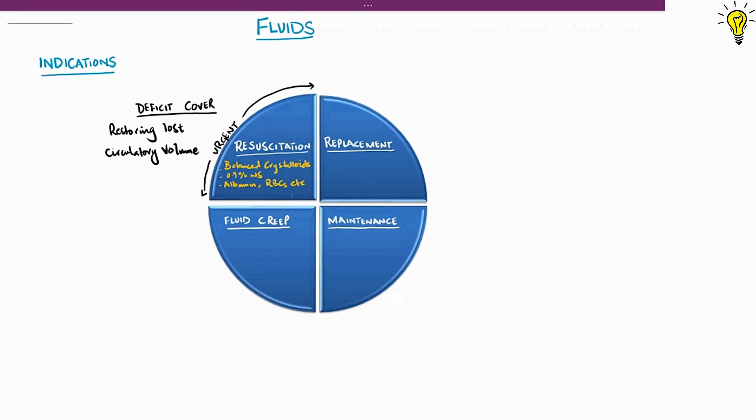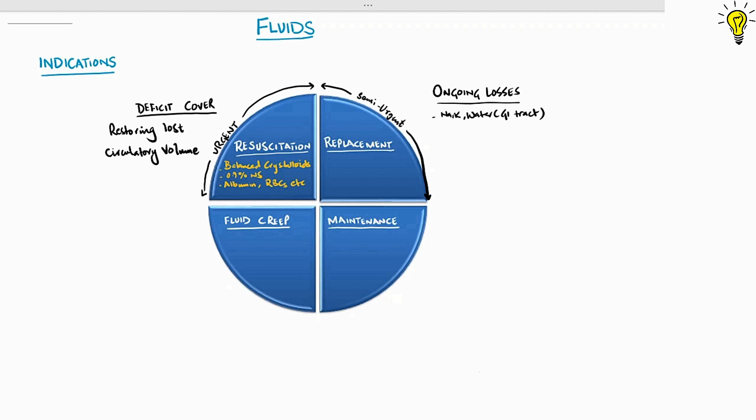Replacement fluid is replacing the ongoing losses, be it electrolytes, water or blood, depending on case-to-case basis. It should mimic the ongoing fluid loss in question. For example, normal saline for ongoing vomiting, ringers lactate for ongoing diarrhea and damage control resuscitations in trauma for ongoing blood losses.